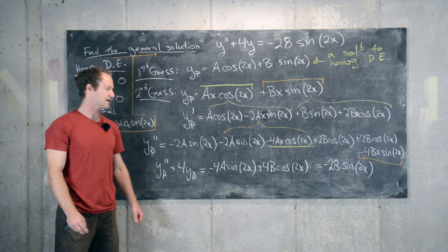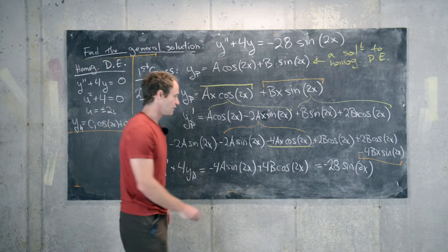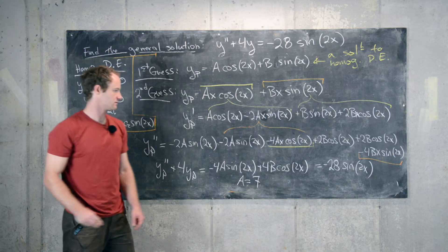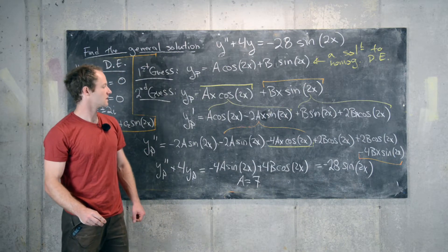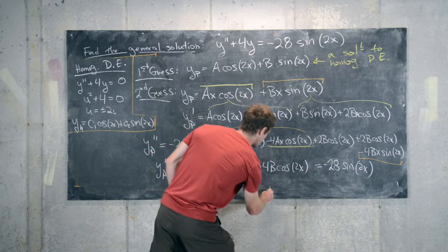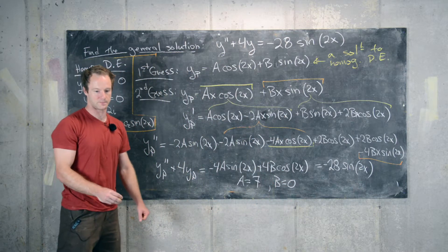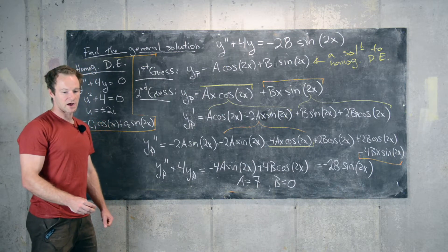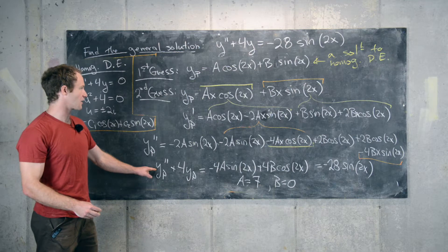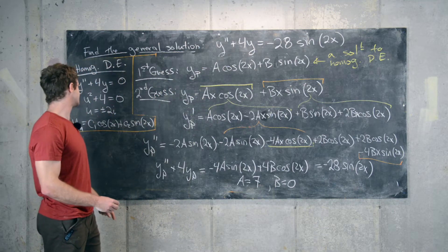Equating coefficients on both sides of the equation, we see that a needs to equal 7 and b needs to equal 0.